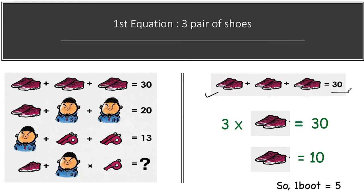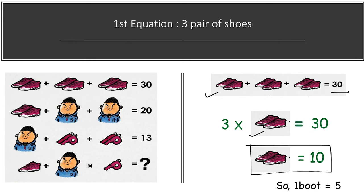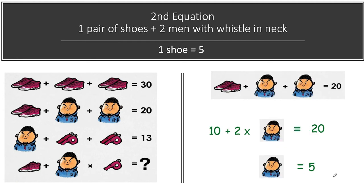Their total value is equal to 30. When you solve this equation, two shoes equals 10, so one shoe or boot value is equal to 5.